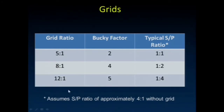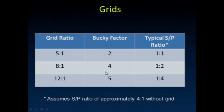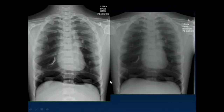For grid ratios of 5, 8, and 12, notice that the holes convert a four-to-one scatter-to-primary ratio to a one-to-four scatter-to-primary ratio. But the price paid is a need for a five-times increase in dose to the patient.